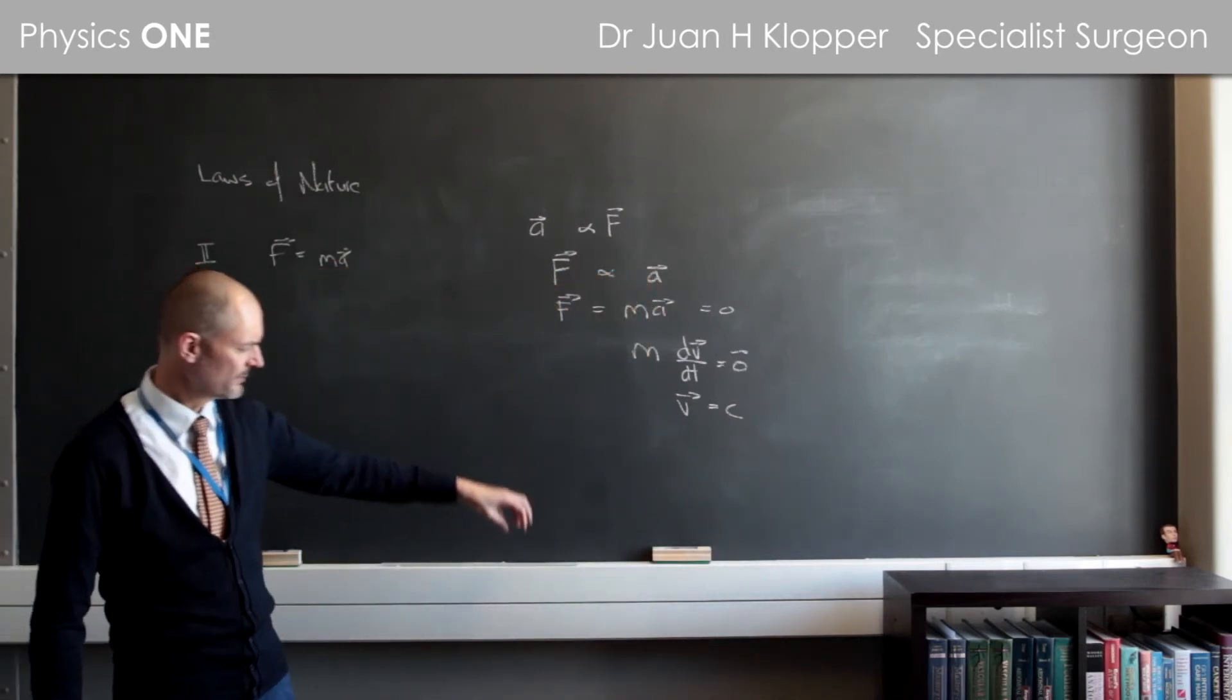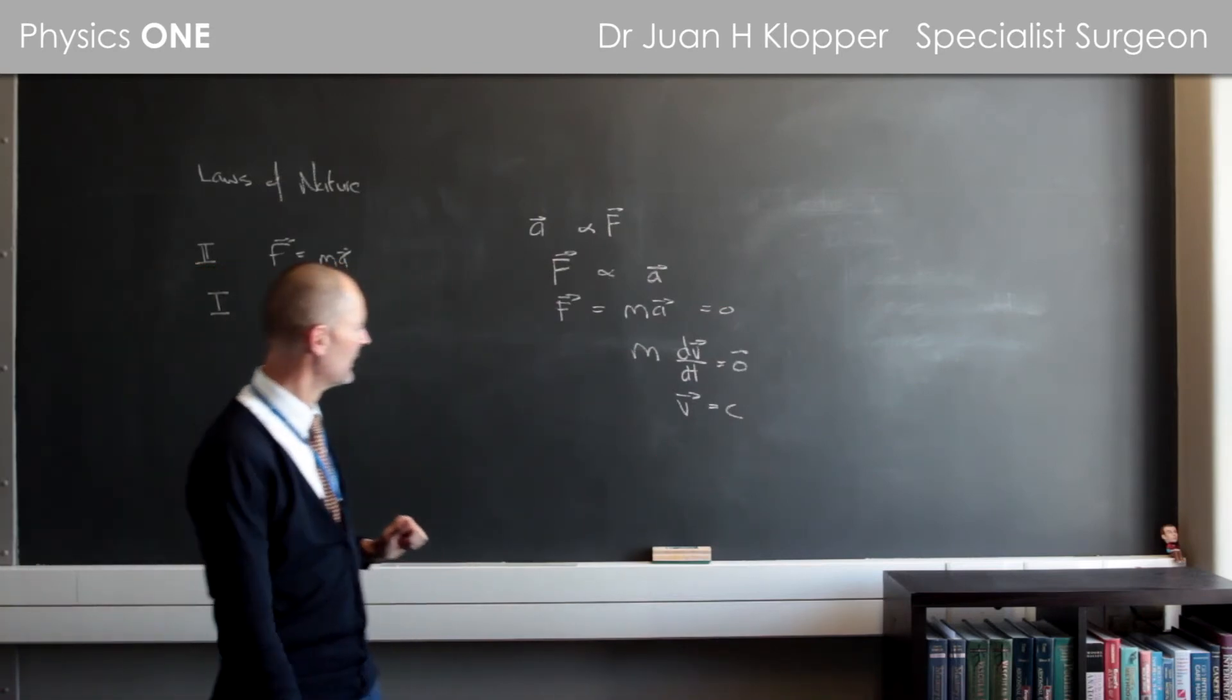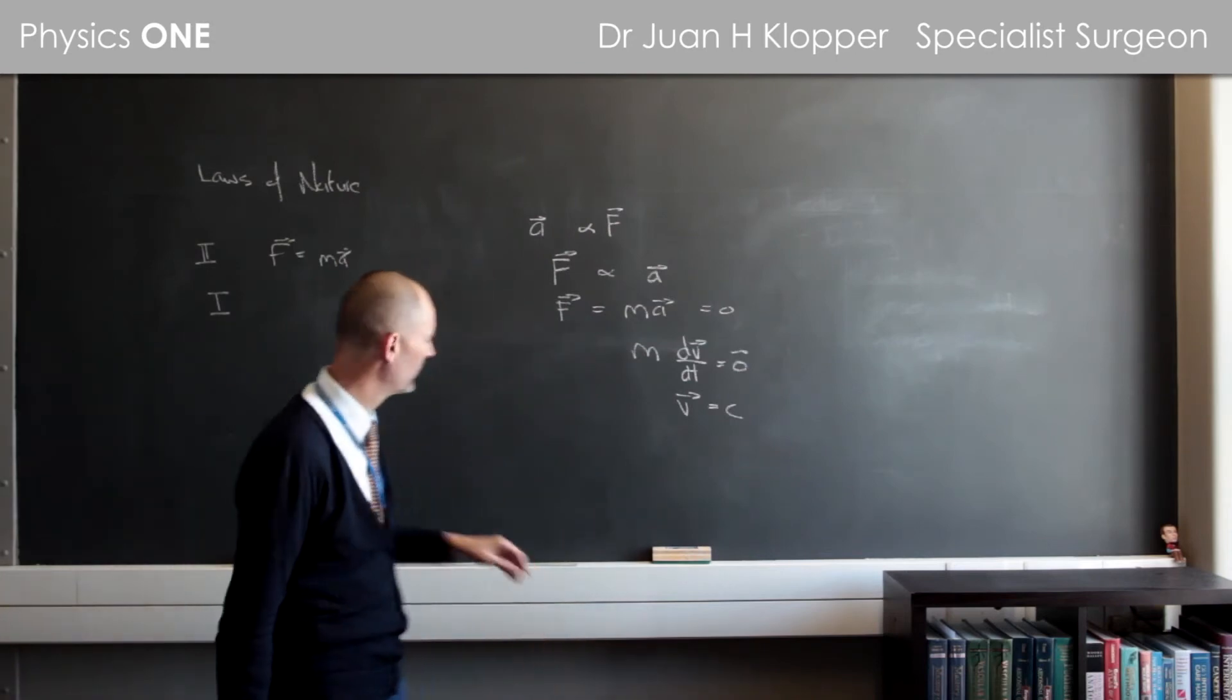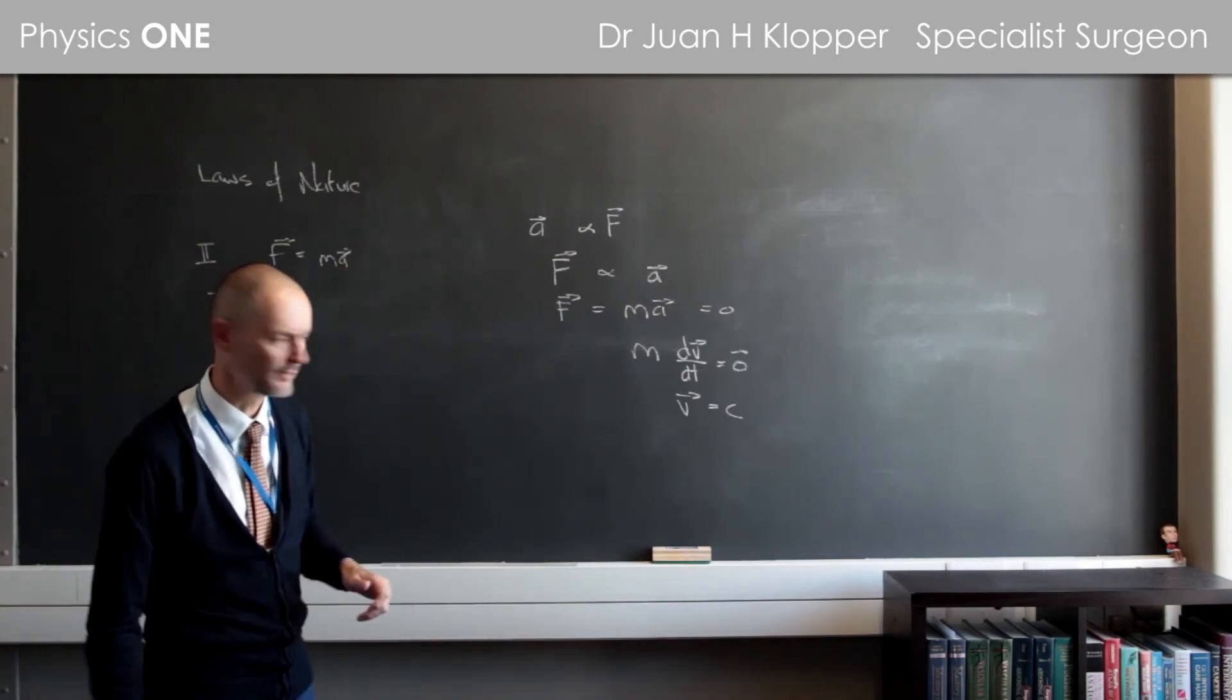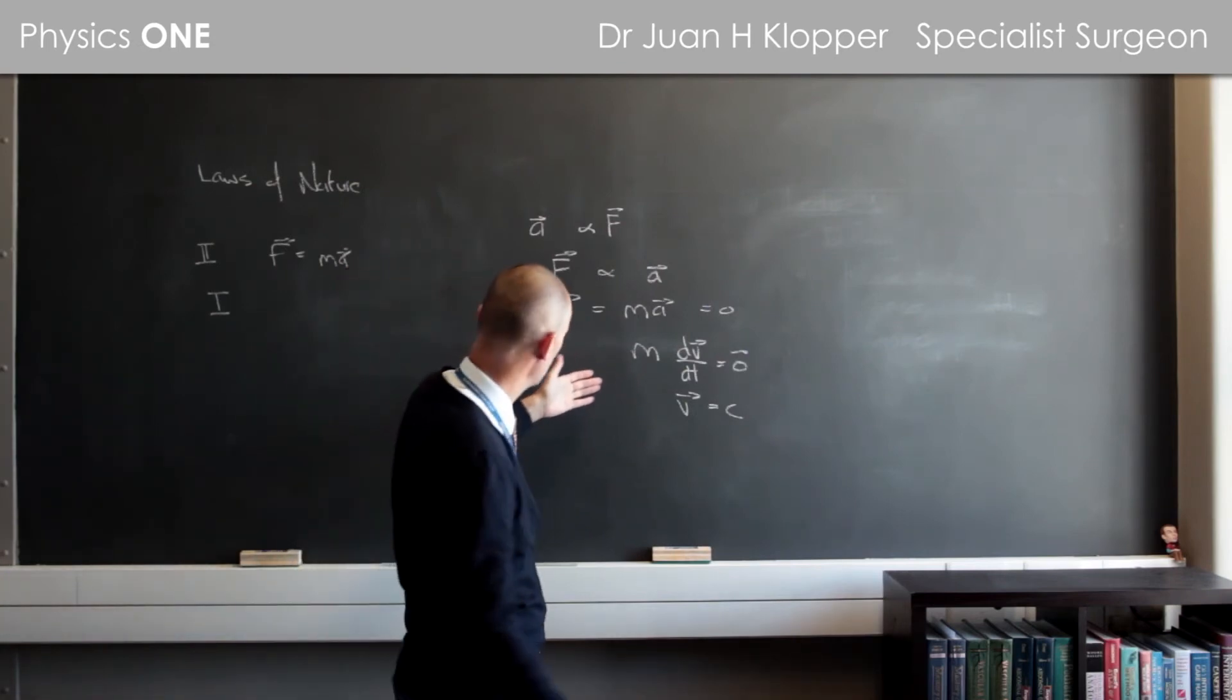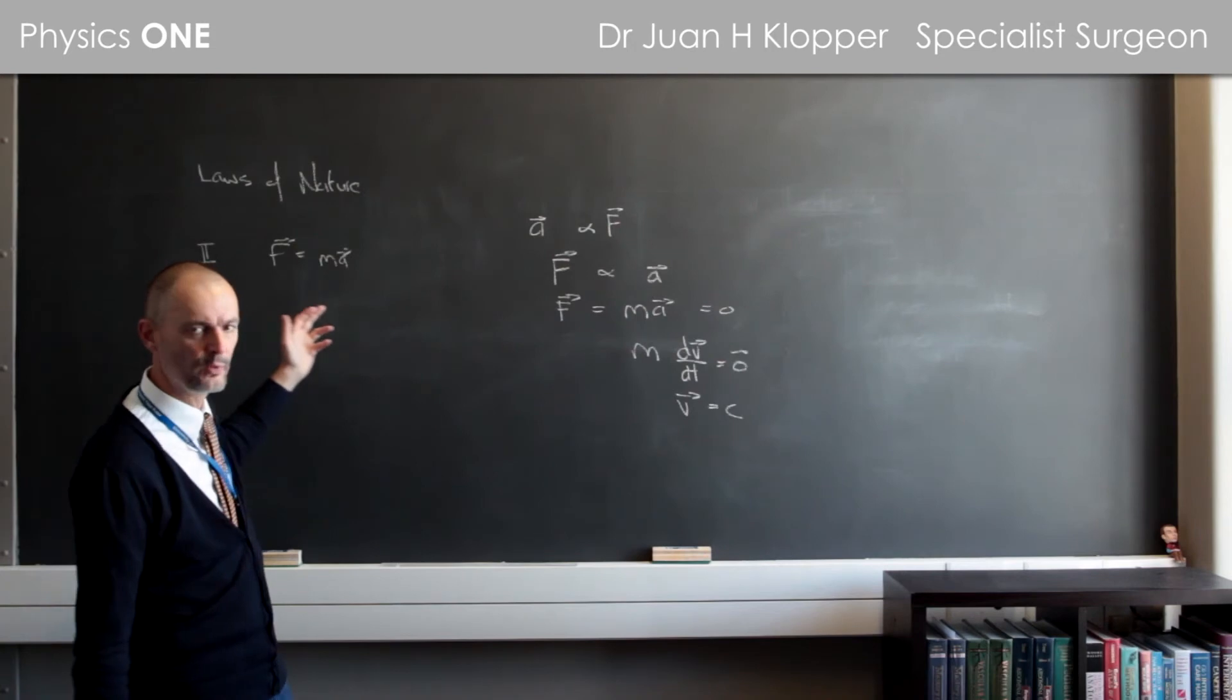A constant is either zero, so the object's standing still, or it's some value, so there's linear motion in the same direction at the same velocity, and we call that Newton's first law. Well, that's not Newton's first law. That's a derivation of the second law. If it's just simply a derivation, why do we call it a law at all?